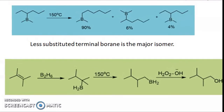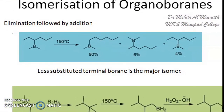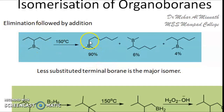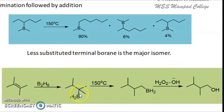Since organoboranes prefer attachment of boron to the less substituted alkene, organoboranes sometimes undergo isomerization, which proceeds via elimination followed by addition. This organoborane undergoes isomerization to give the terminal borane — 90% of the product is the terminal borane. This confirms that the less substituted terminal borane is always the major isomer. Thexyl borane also undergoes isomerization at 150°C to give the terminal borane, and upon peroxide treatment you get the terminal alcohol.